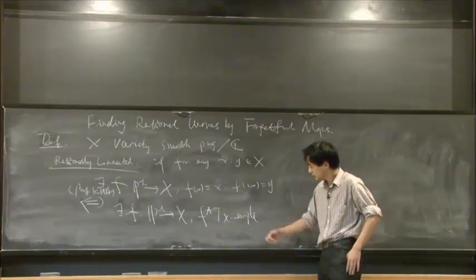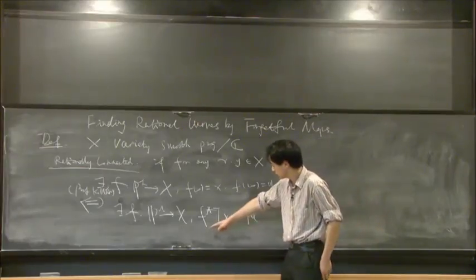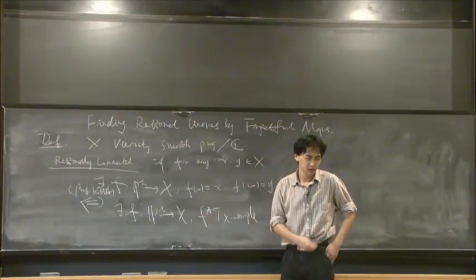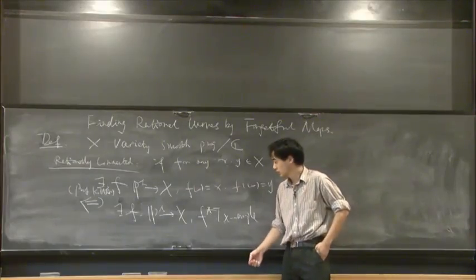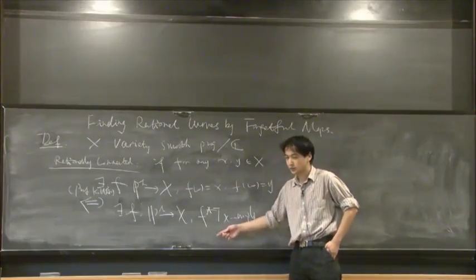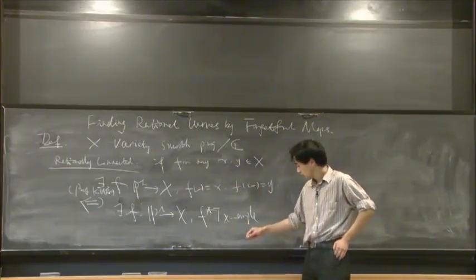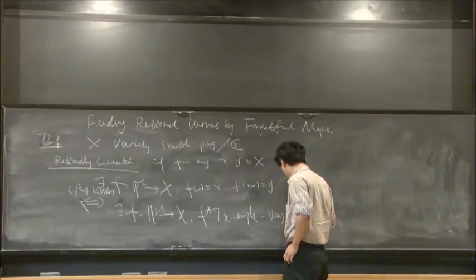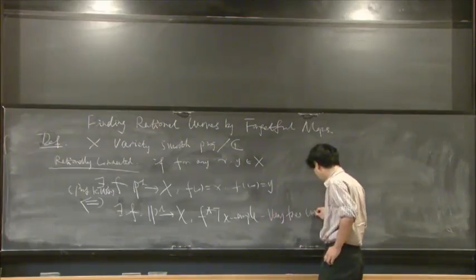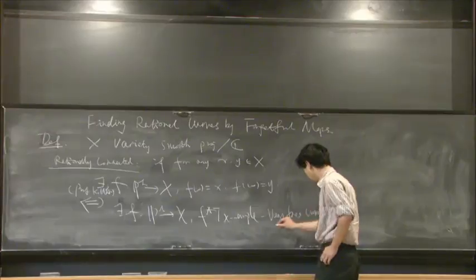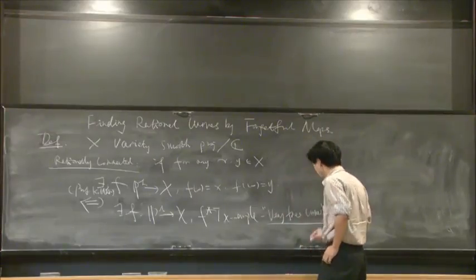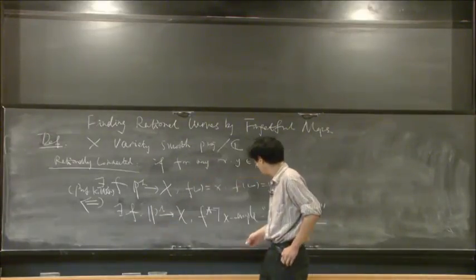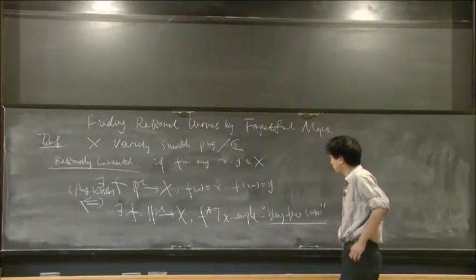We can imagine that in this case, by writing down the deformation obstruction of this map, it can be deformed to a very large degree. We call this curve a very free curve as a definition. After he proved this equivalence, he named this curve a very free curve.